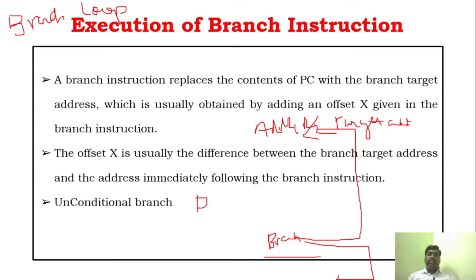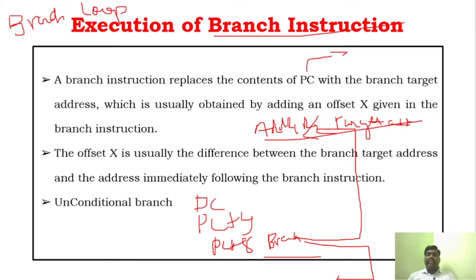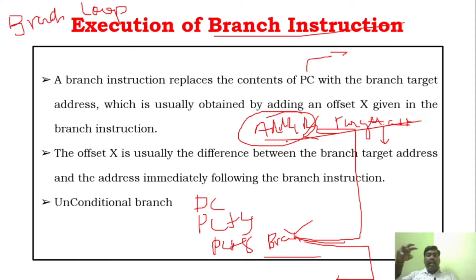Normally, the PC executes instructions one by one — PC, then PC plus 4, then PC plus 8, incrementing sequentially. But for a branch instruction, the PC has to be loaded with the target address. It should not go to the next sequential instruction. To execute the branch instruction, it must find out the target address — which address it has to execute — and that can be found by adding the offset value with the PC value.